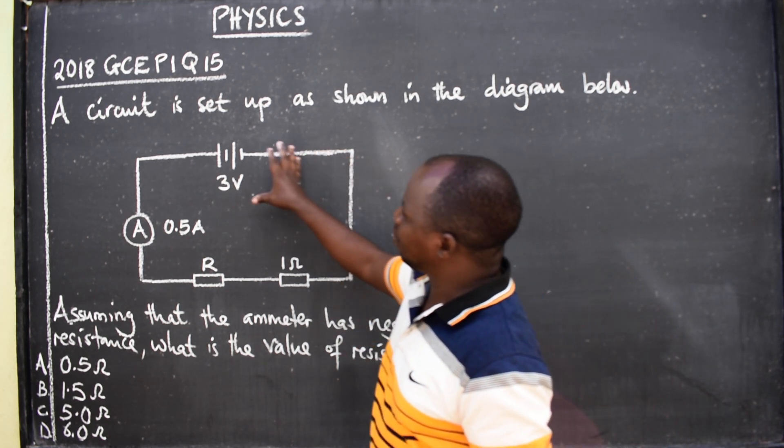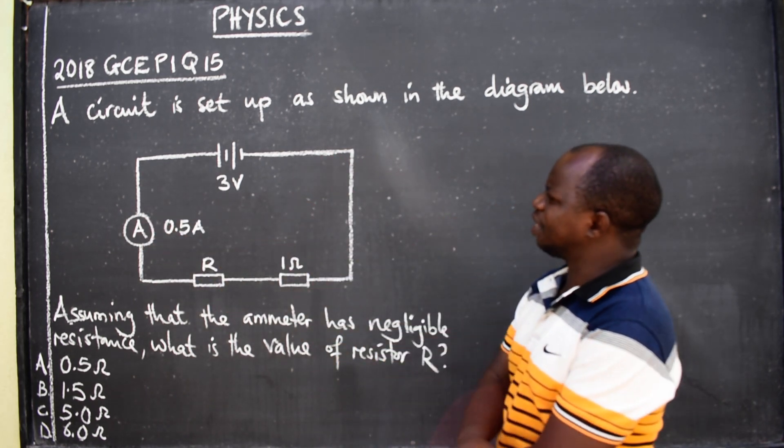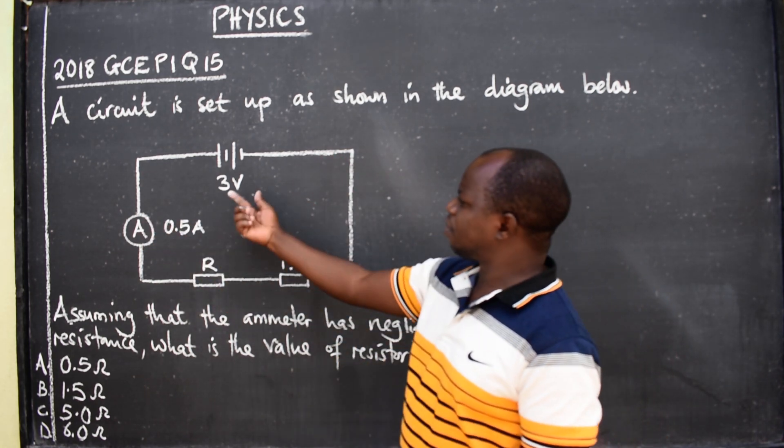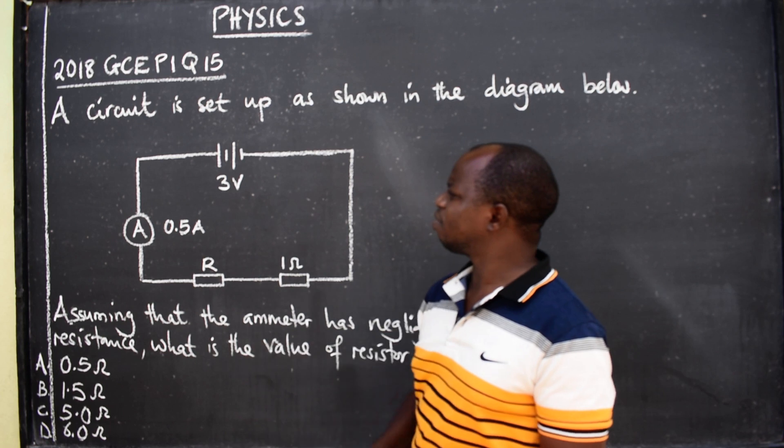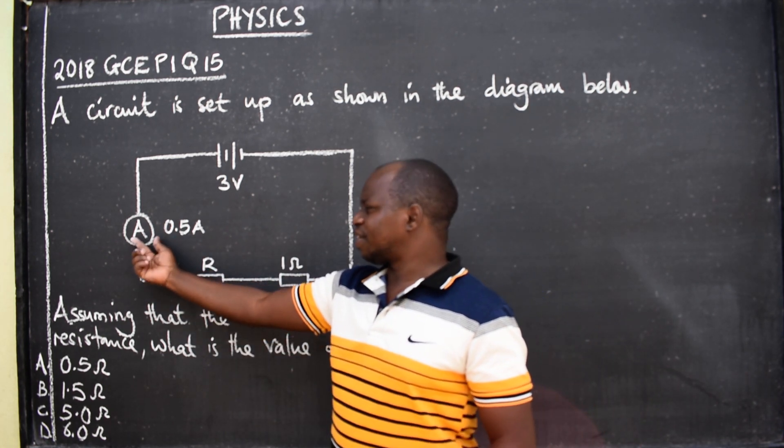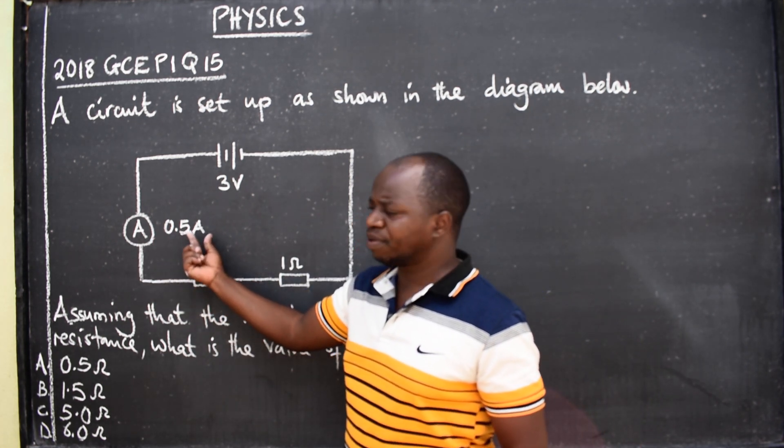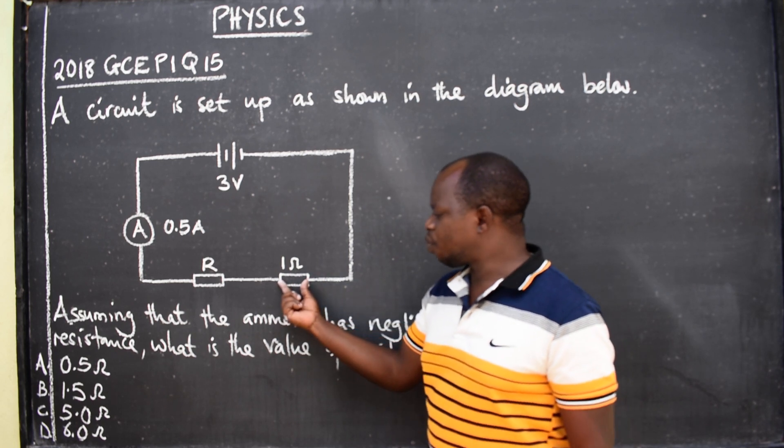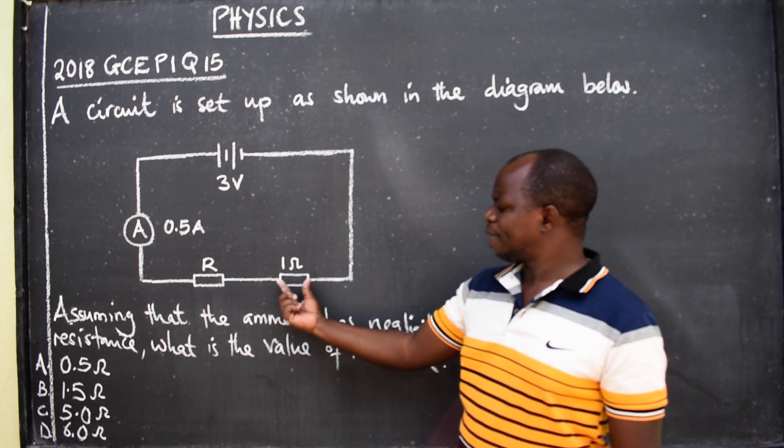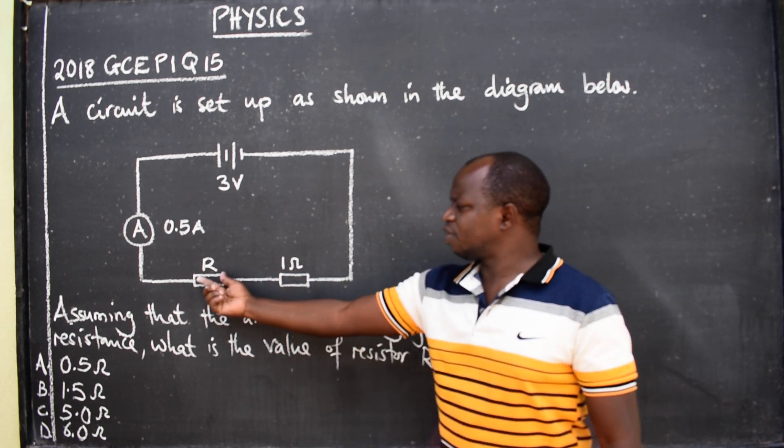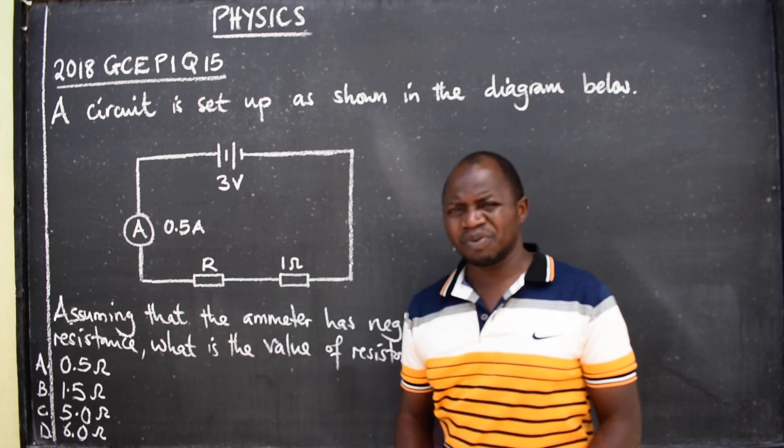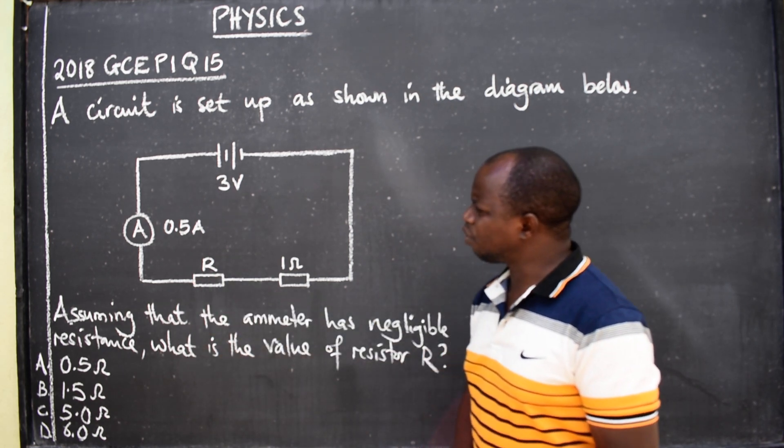Now we have a circuit diagram here where we have voltage 3 volts. Then the ammeter reading is 0.5 amps. We have one resistor here which is 1 ohm. Then we have the one that they want us to find. How do you go about it?